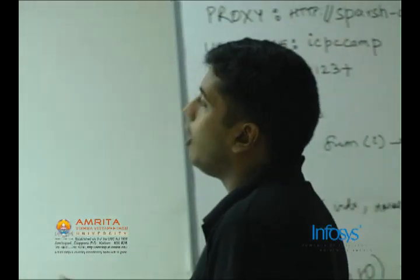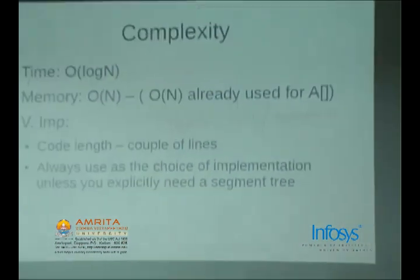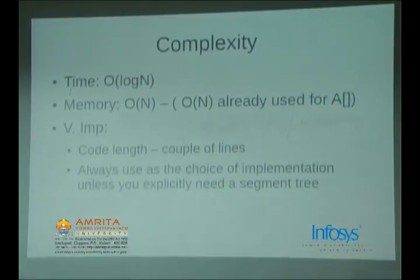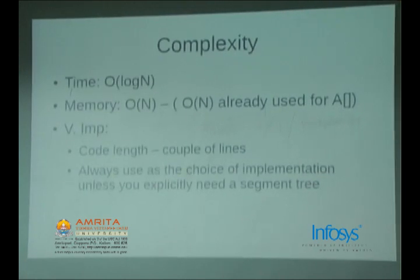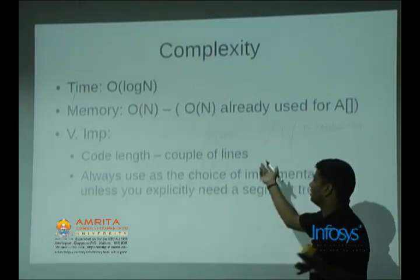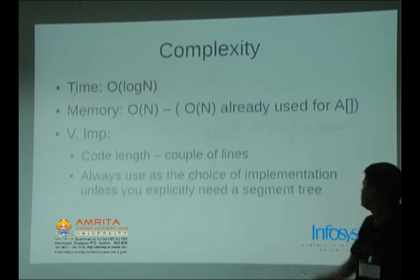Complexity: O(log n). Memory: theta(n). I'm declaring an extra array f3 which is theta(n), but theta(n) is already used for the array A. So if I can use theta(n) for A, I can use theta(n) for f3 as well — I'm essentially using 2n memory, which is not asymptotically greater. Some structures use O(n log n) memory and similar, so code length is just a couple of lines.